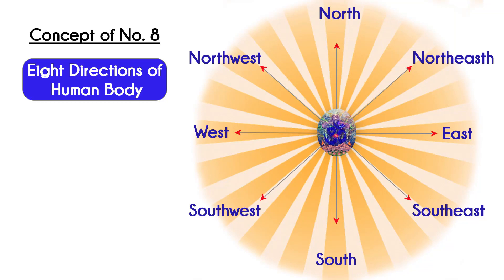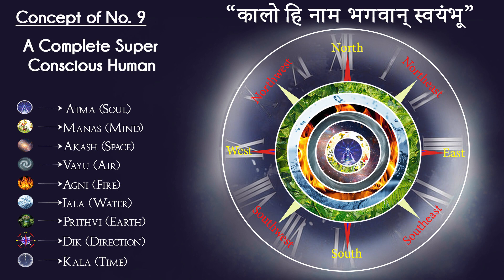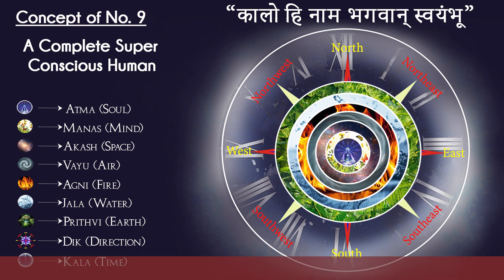In our body, vastu is present — directional influence on the human body. East, southeast, south, southwest, west, northwest, north, and northeast — your body has all these directional electromagnetic fields, which have been studied in our Vedas. Nine elements influence the body: earth, water, fire, air, space, time dimension, directional dimension, mind, and soul. So these are nine.